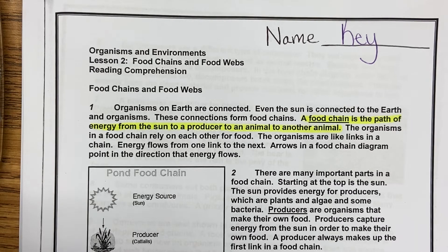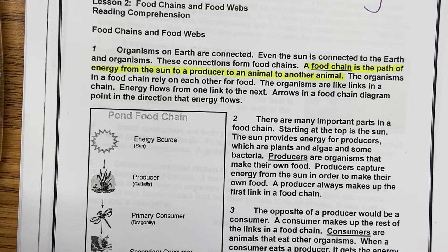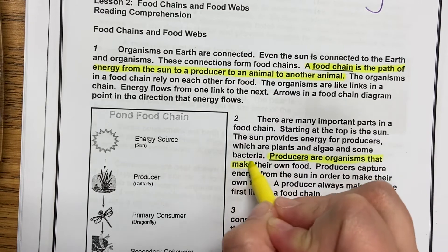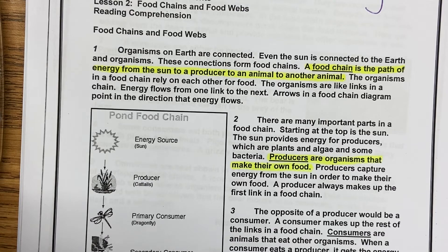Paragraph two: There are many important parts in a food chain. Starting at the top is the Sun. The Sun provides energy for producers, which are plants and algae and some bacteria. Producers are organisms that make their own food. Producers capture energy from the Sun in order to make their own food. A producer always makes up the first link in a food chain. So we're going to highlight the vocabulary word 'producers' and get the definition that producers are organisms that make their own food. They're basically telling you producers are plants.